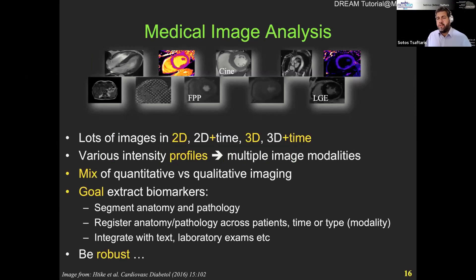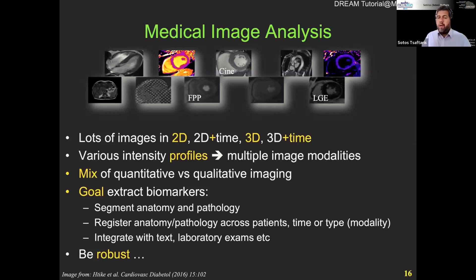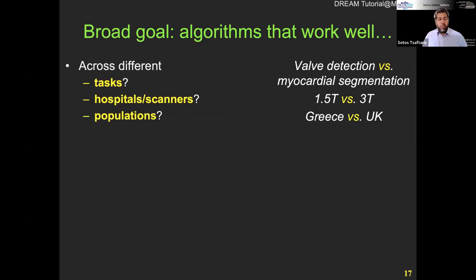We need to extract biomarkers, measure the size of pathological regions, or register images, and of course sometimes integrate them with other examinations like text, laboratory exams, or clinical information. All the while we need to do this robustly — creating algorithms that will work across different tasks, different hospitals and scanners, say 1.5 Tesla versus 3 Tesla, or even different populations, which is relatively hard.